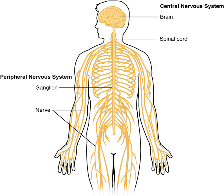During early development of the vertebrate embryo, a longitudinal groove on the neural plate gradually deepens and the ridges on either side of the groove become elevated, and ultimately meet, transforming the groove into a closed tube called the neural tube. The formation of the neural tube is called neurulation. At this stage, the walls of the neural tube contain proliferating neural stem cells in a region called the ventricular zone. The neural stem cells, principally radial glial cells, multiply and generate neurons through the process of neurogenesis, forming the rudiment of the CNS.